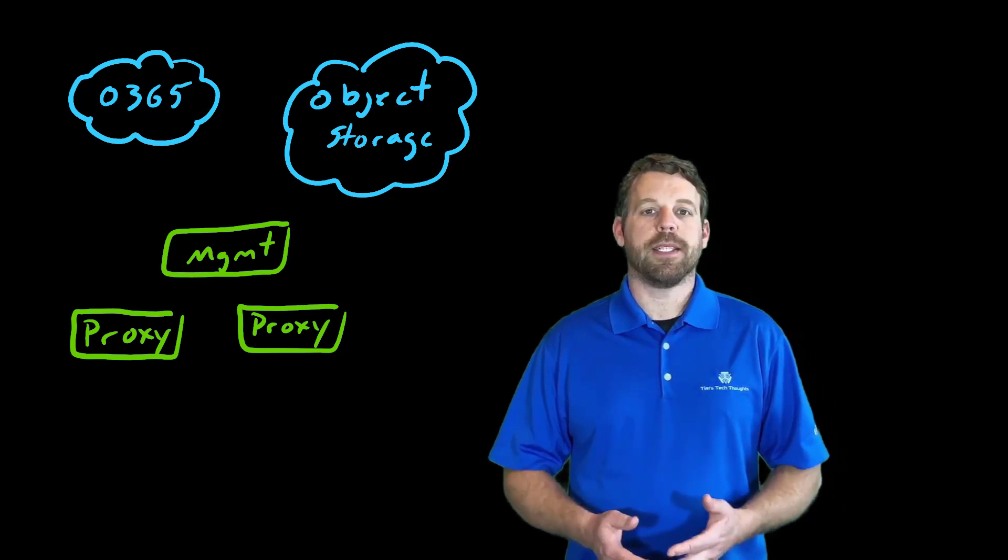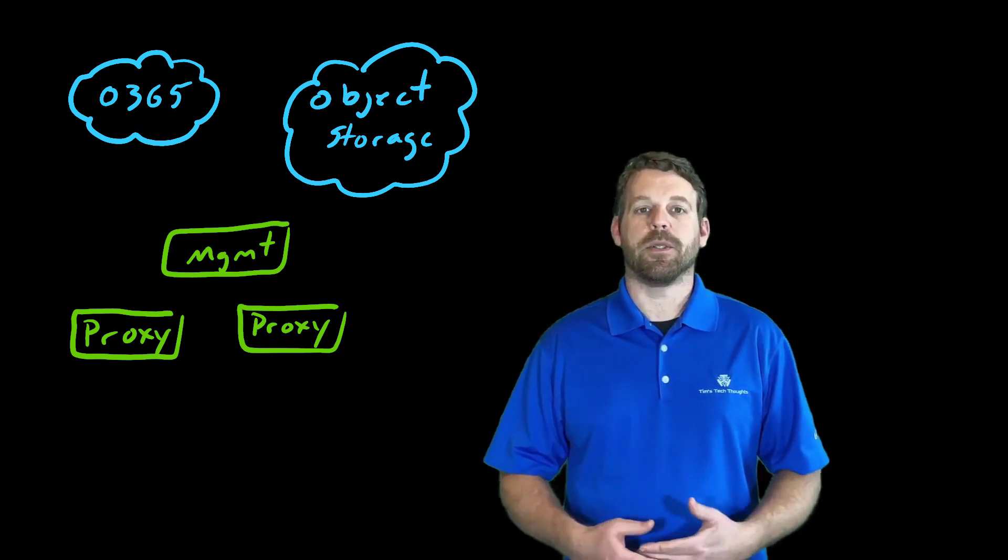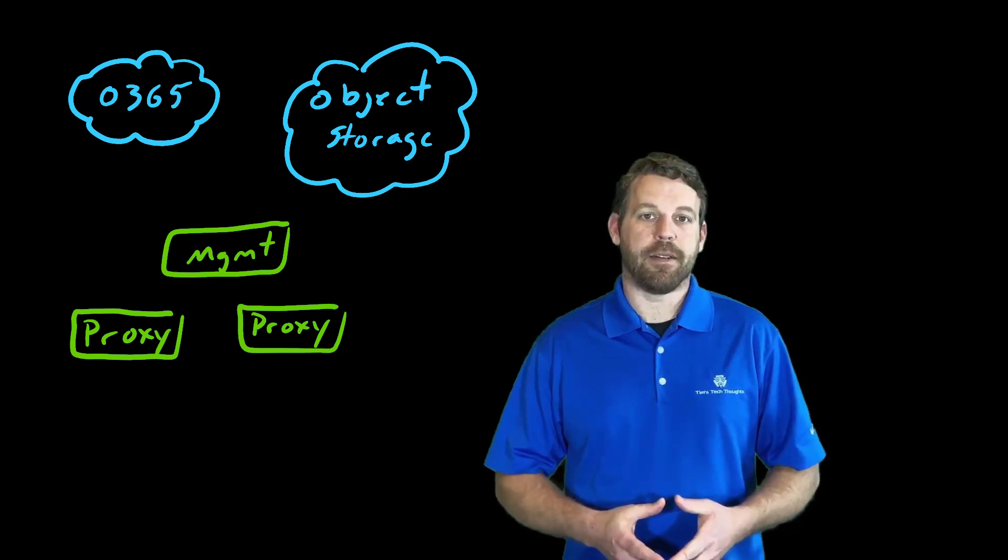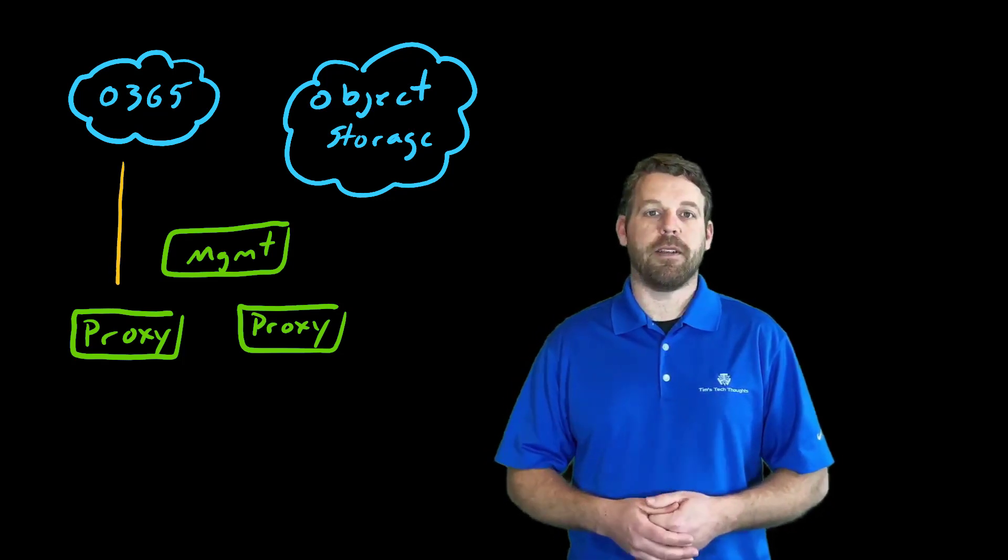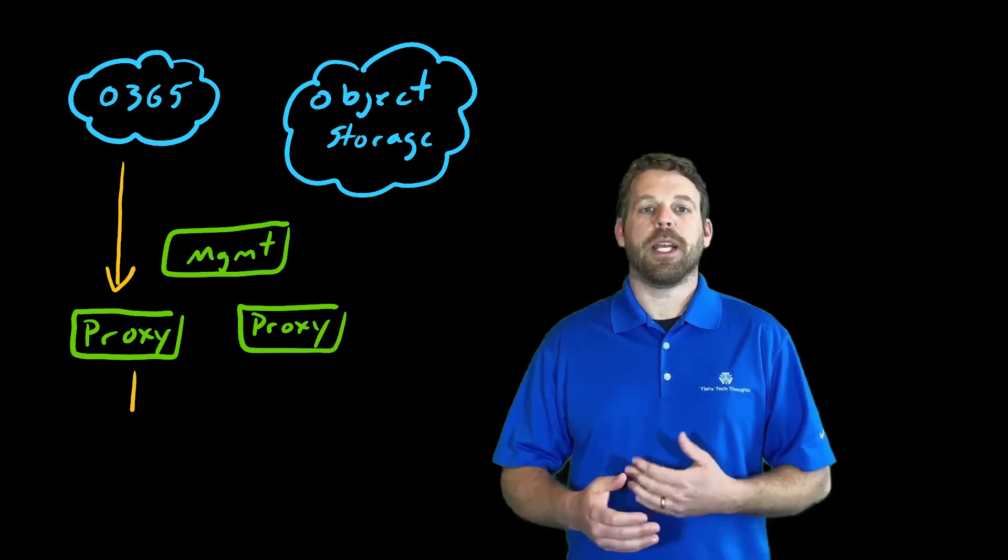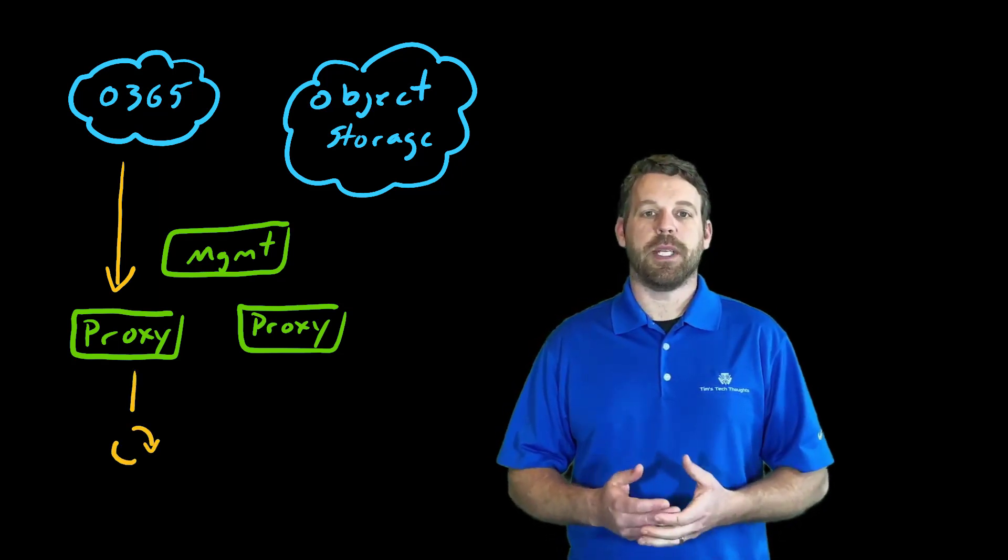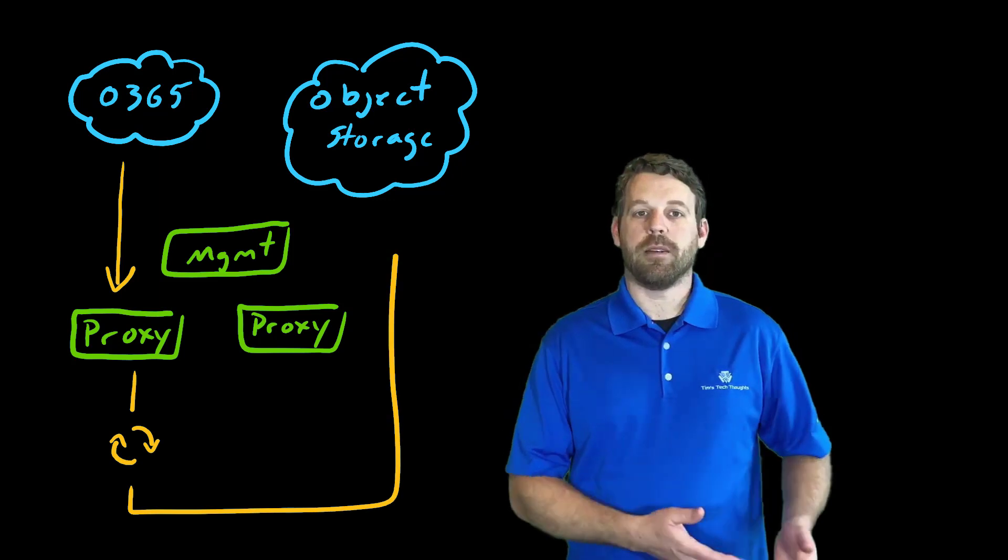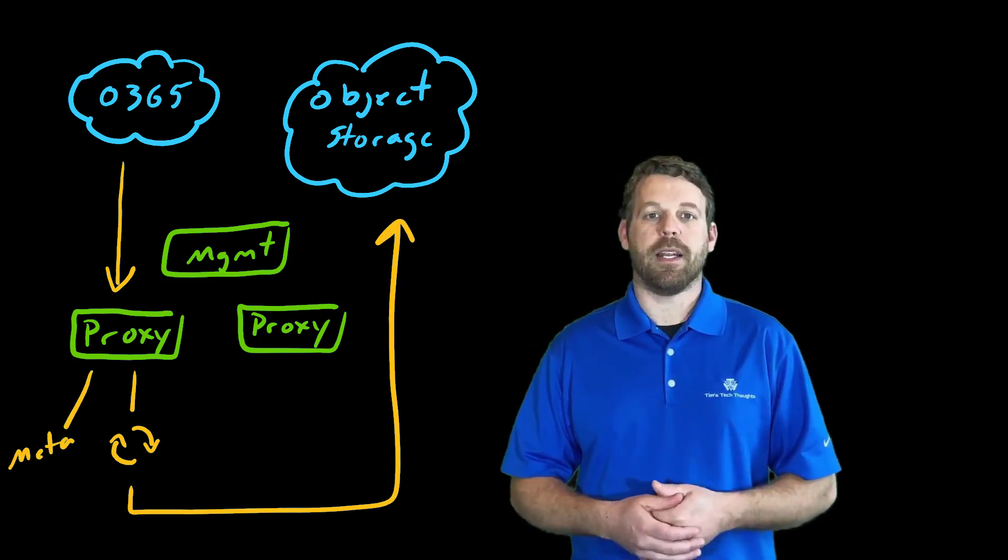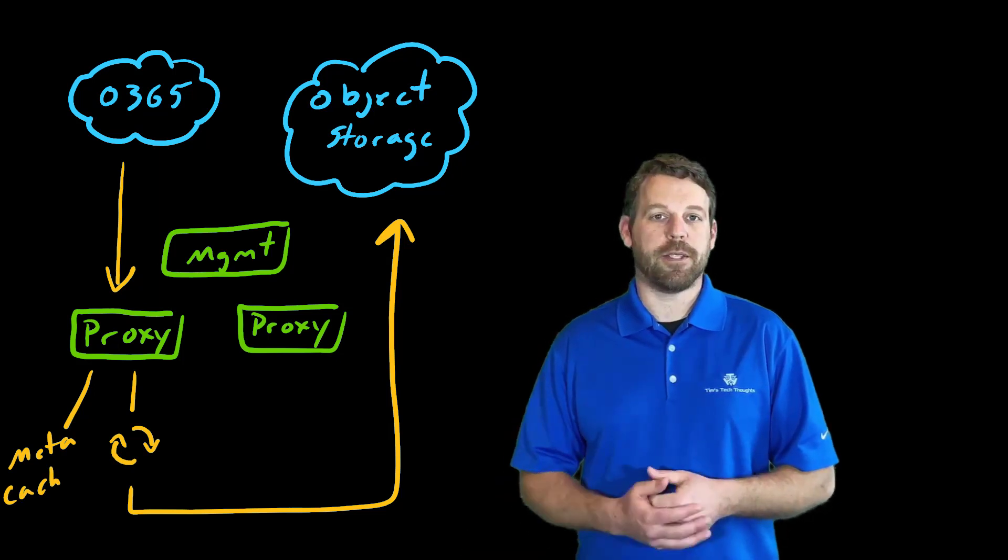So we have a management server here, and we have a couple proxies, and those are connected to some object storage repositories. And you can see that when we back up our data from the Office 365 infrastructure, it will flow down into our proxies. It will get transformed M-RAM into objects. Some of the metadata will go down to the cache repository. A copy of the metadata will go with the data objects themselves directly off to object storage.